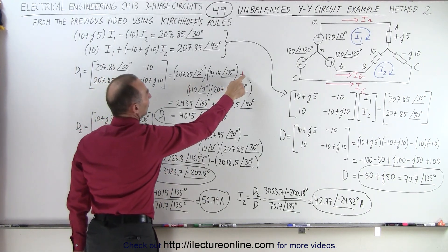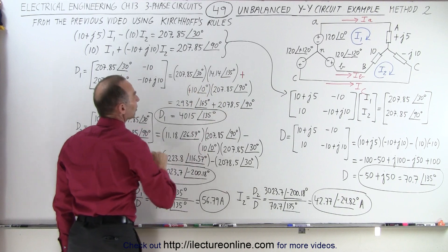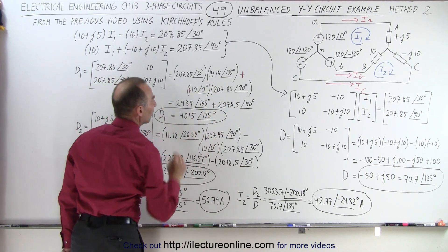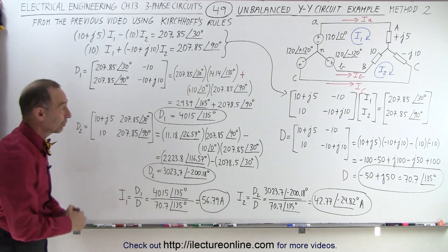We can replace this with a plus one, replace this with a plus to make it a little bit easier. And then when we simplify that, we get 4015 with a phase angle of 135 degrees for D1.